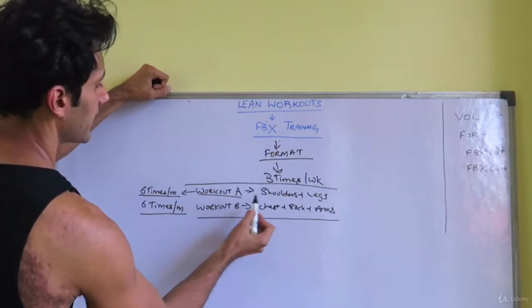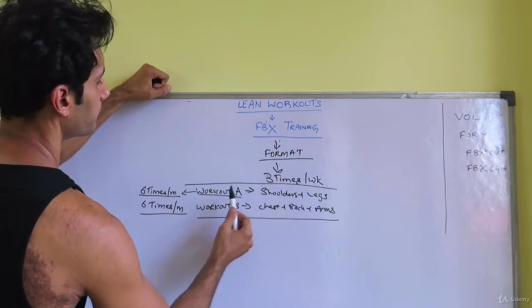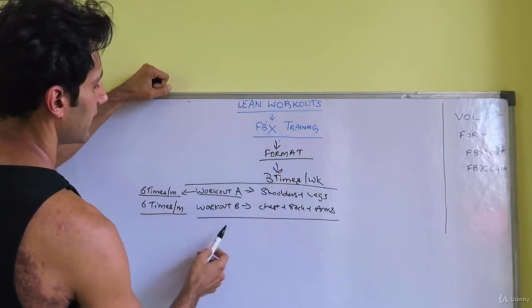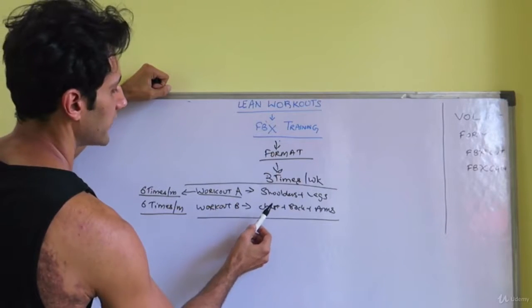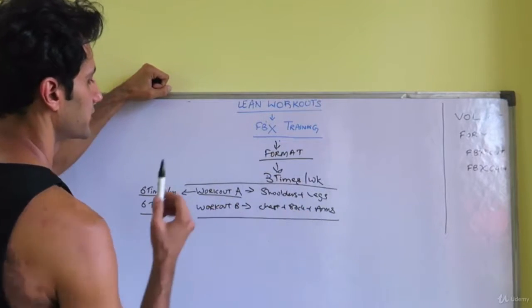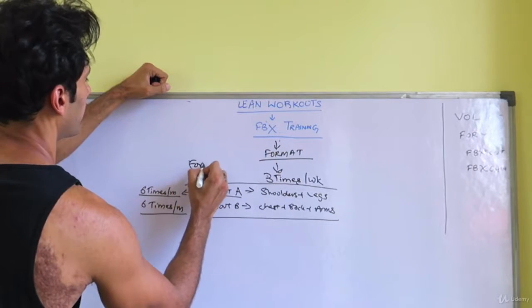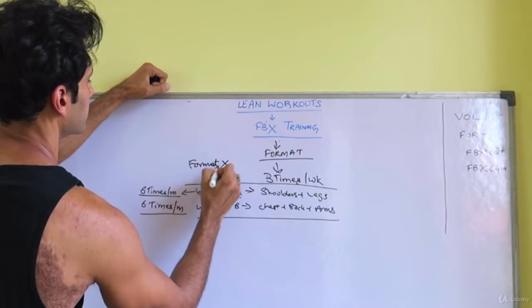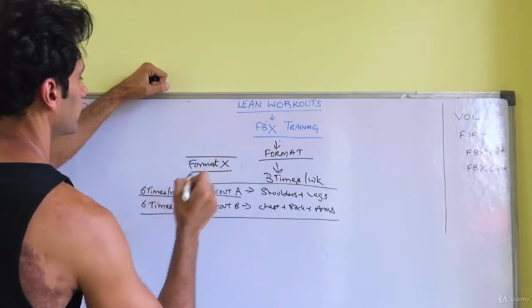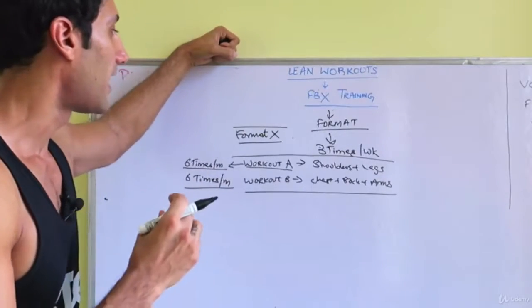Every fourth to fifth day you're training your shoulders and legs, and every fourth or fifth day you're training your chest, back, and arms. This is the format. Let's call it format X.